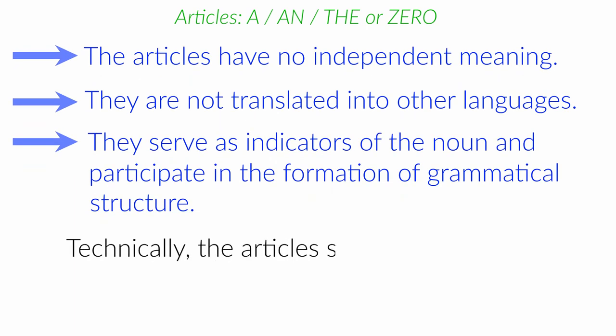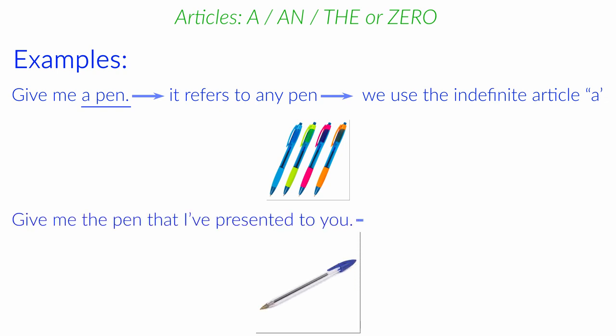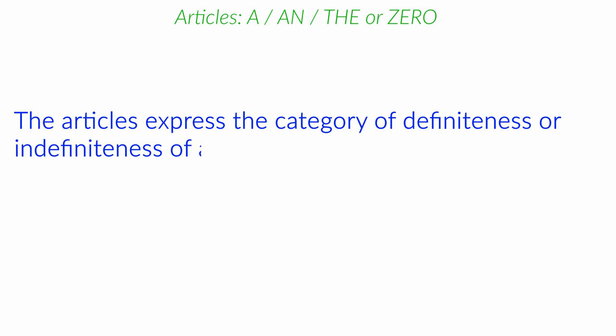Technically, they serve as an adjective that is used to define a noun in speech. For example, give me a pen. This sentence refers to any pen. Therefore, we use the indefinite article, a, a pen. Give me the pen that I presented to you. This sentence refers to a specific pen. So we put the article, the, before the noun pen. As you can see from the examples, articles express the category of definiteness or indefiniteness of a noun.